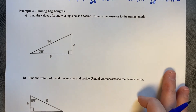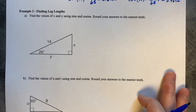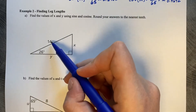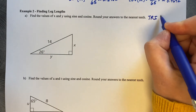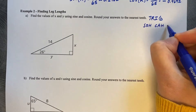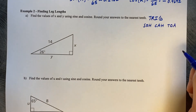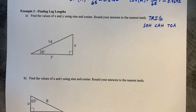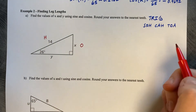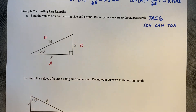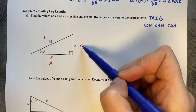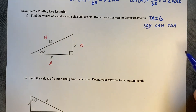Example 2 — finding leg lengths. Find the values of x and y using sine and cosine, rounded to the nearest tenth. When we approach a problem like this, I have one side length and one angle, so I know I'm using trig. Writing out SOH CAH TOA — y is adjacent, and let's start with x. x and 14 is opposite and hypotenuse.